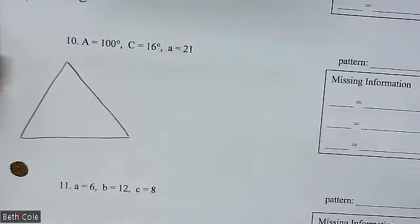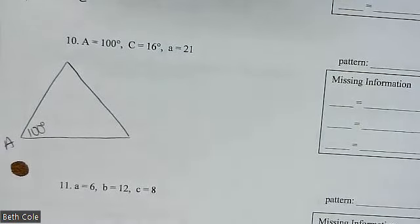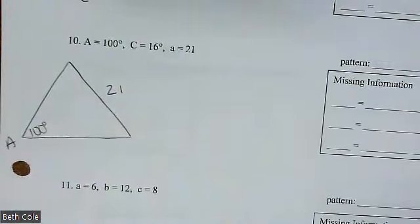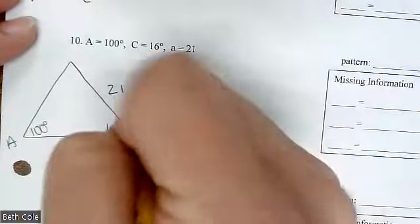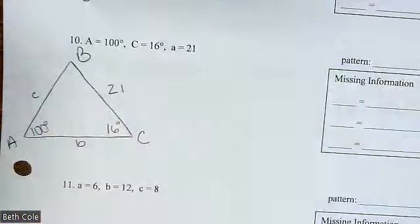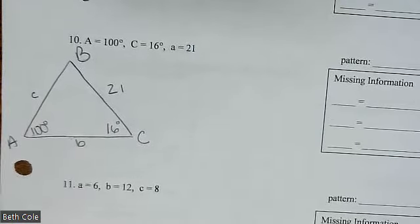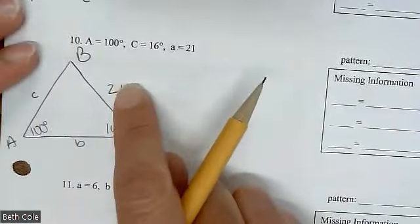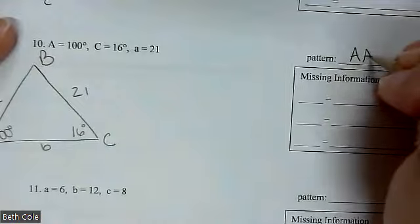For problem 10: angle A is 100 degrees at the bottom left — that's bigger than 90 so draw it accordingly. Across from that is side a = 21. Angle C is here with side c = 16. Angle B goes at the top — we don't know anything about it. The pattern is angle-angle-side, or side-angle-angle — just make sure the side is not in between the two angles.